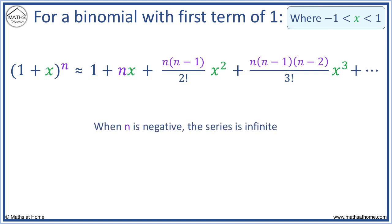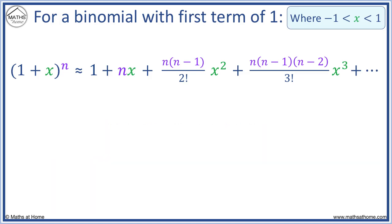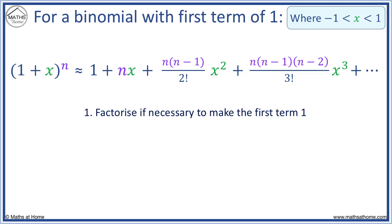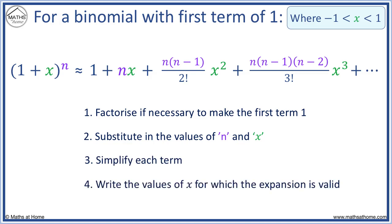When n is negative, the series contains an infinite number of terms, so we only find the first few terms as requested in the question. Here are the steps: factorise if necessary to make the first term 1; substitute the values of n and x into the formula; simplify each term; and write the values of x for which the expansion is valid.